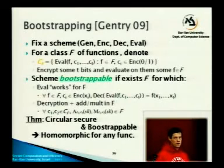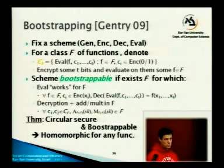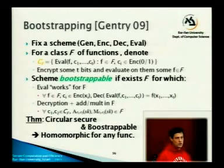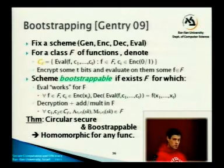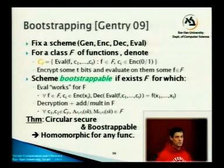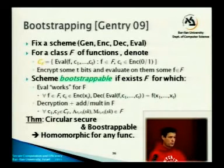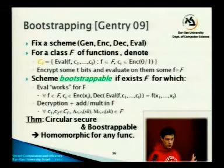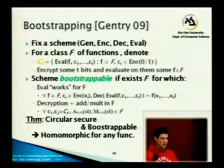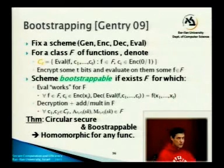The theorem proved pictorially on the previous slide is: if an encryption scheme is (a) circularly secure and (b) bootstrappable — satisfying that definition — then the cryptosystem is fully homomorphic for any function. Since you can evaluate additions and multiplications, and any Boolean function can be expressed as a polynomial, evaluating any polynomial means evaluating any function. That's Gentry's theorem.